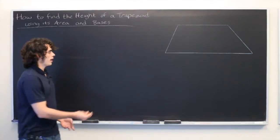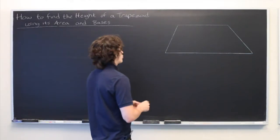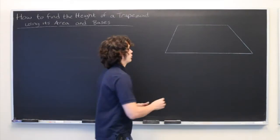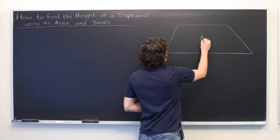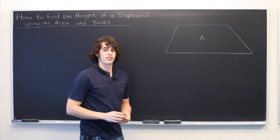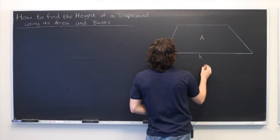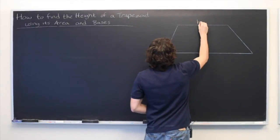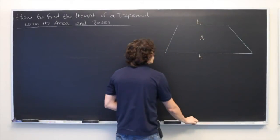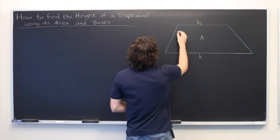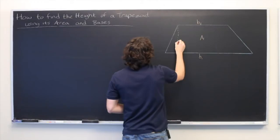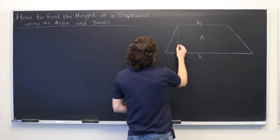Here we have a trapezoid and we're assuming that we already know the total area, which we'll call A, and the length of the two bases, which we'll call B1 and B2. And what we're interested in finding is the height, which we will label H.